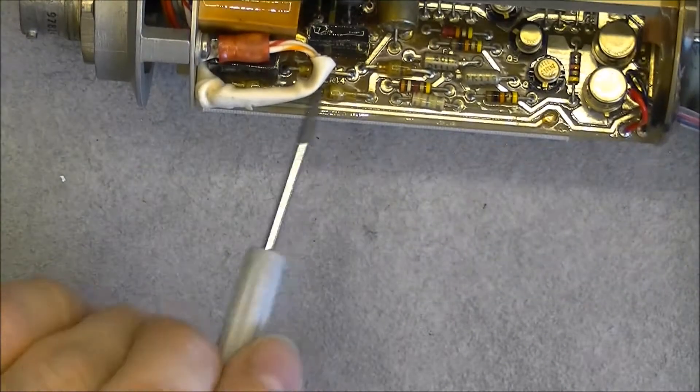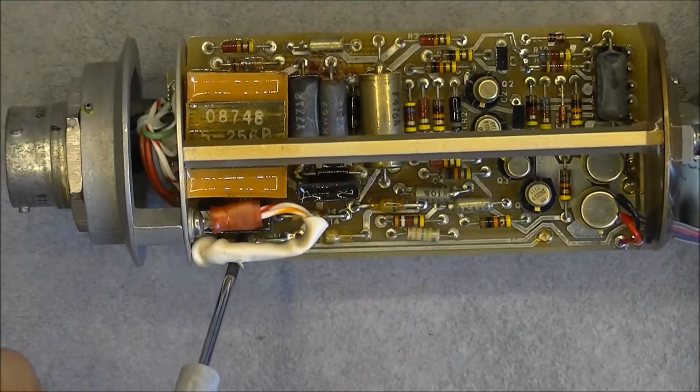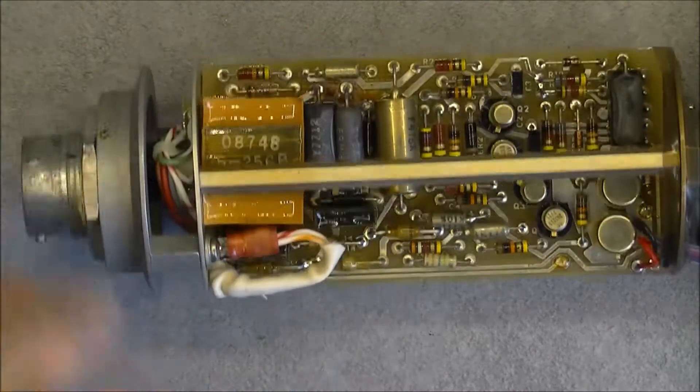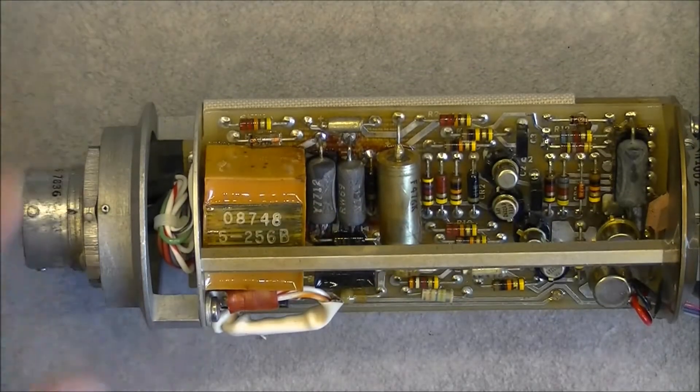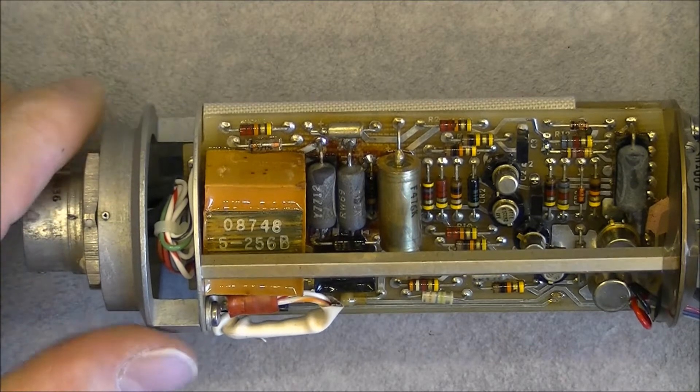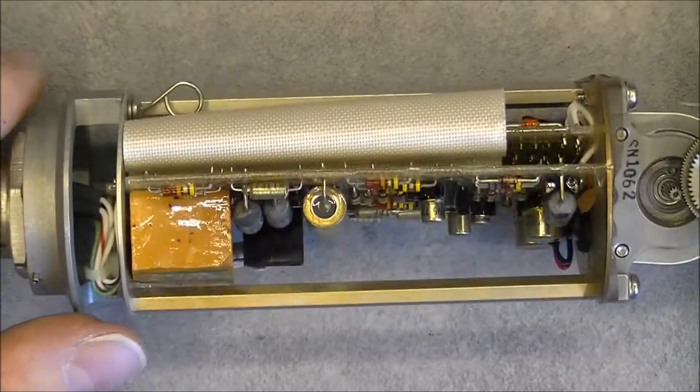Four diodes here, which may be a bridge rectifier. Yes, they are connected two by two, so it is a bridge rectifier and probably with a smoothing capacitor here. So we have a local power supply.